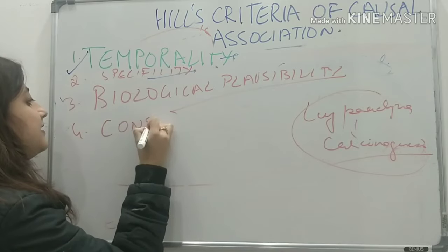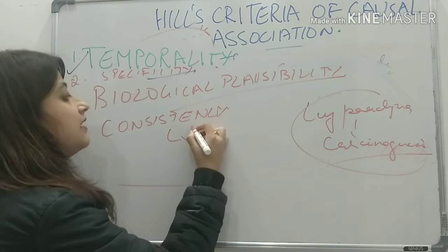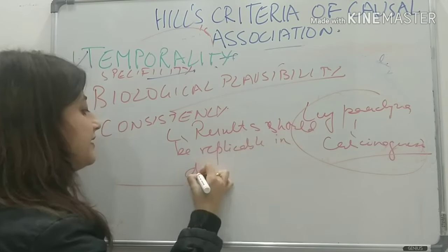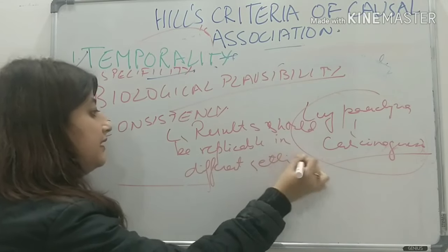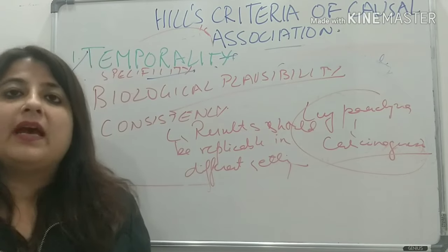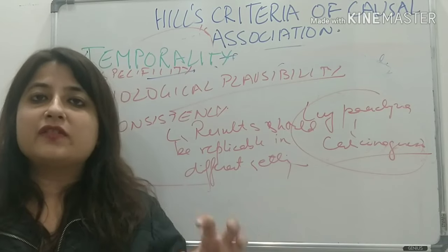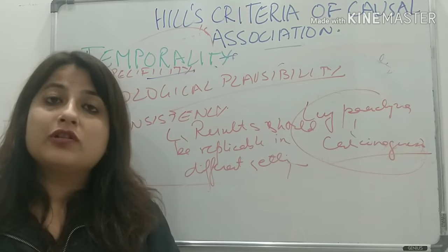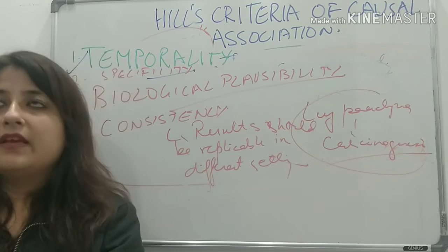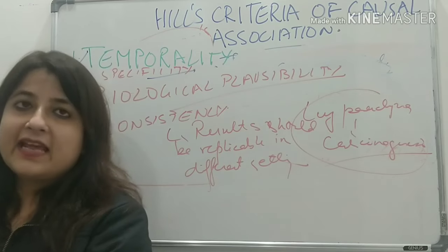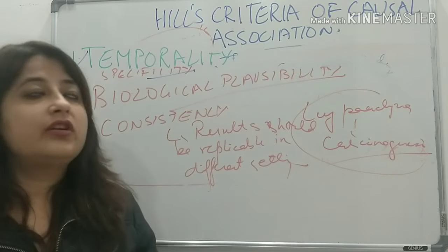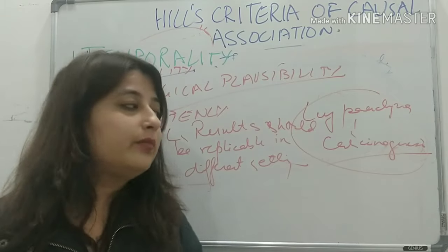The fourth criterion is consistency, meaning results should be replicable in different settings. If I establish by a cohort study in Delhi that smoking is a risk factor for lung cancer, someone doing the same study in Chennai, Pakistan, or America should get the same finding. That is consistency — the same results should come out across different populations and settings.